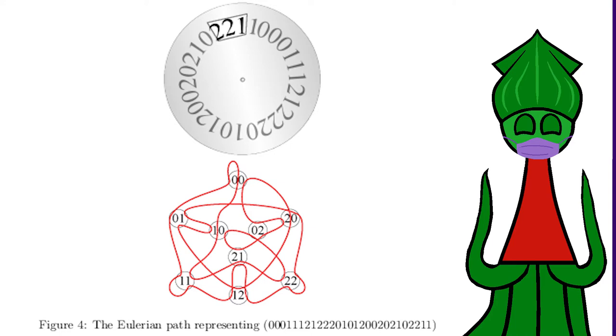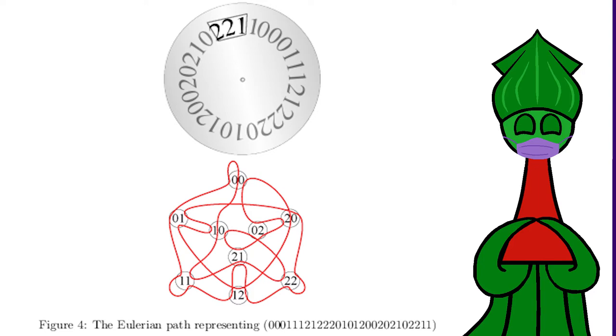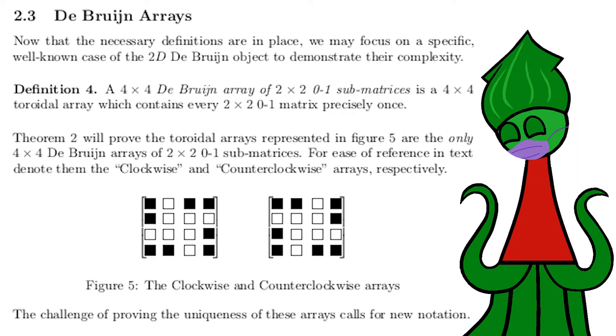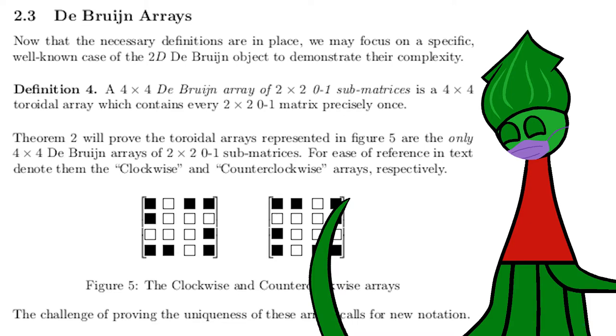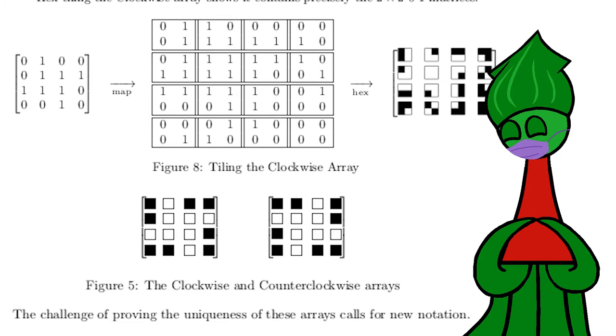But it gets a little more rad. We can make more than just Debron sequences. Here are some Debron tori. Like a sequence loops back around beginning to end, a torus loops left to right and top to bottom. It's like a donut.